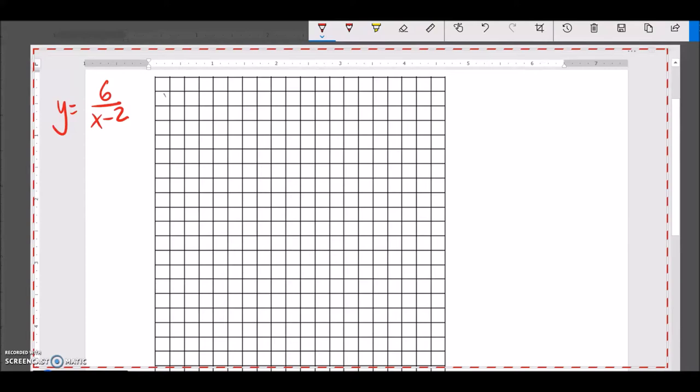So we are going to sketch a graph of this right here, y equals 6 over x minus 2. First off, let's look for any asymptotes that there might be. One of the things I know about asymptotes is I can't divide by 0.